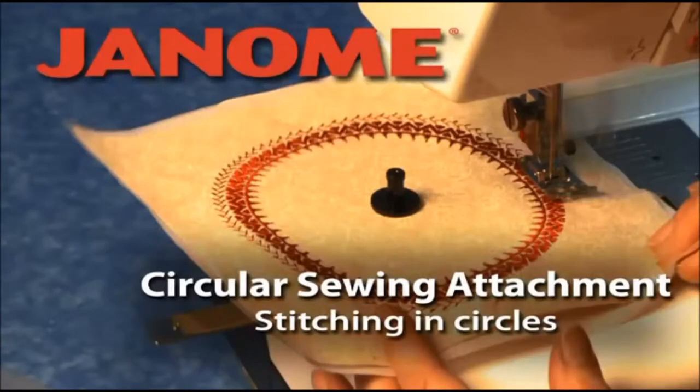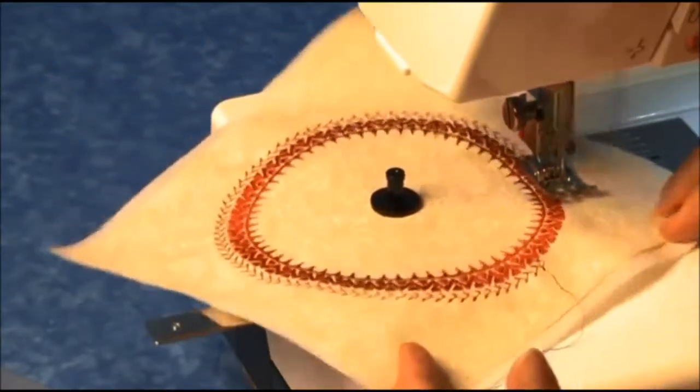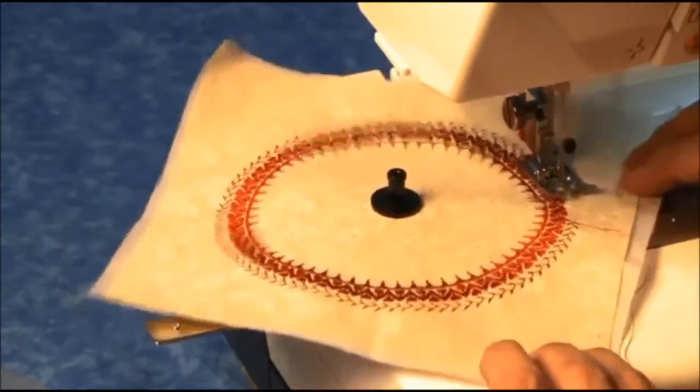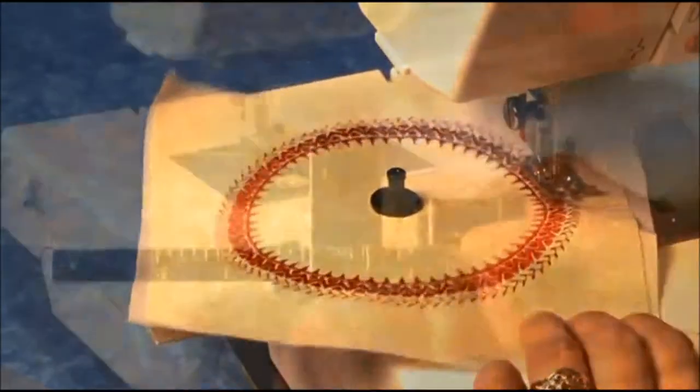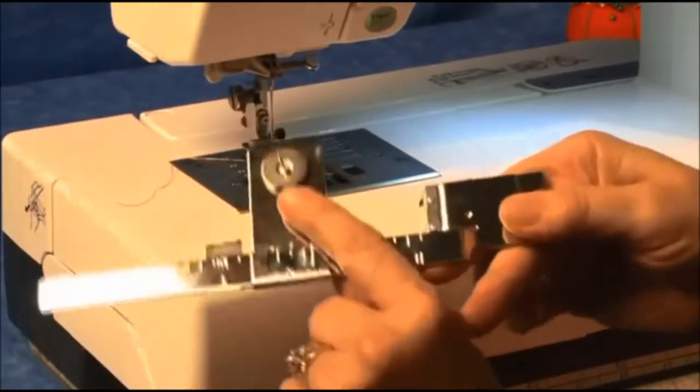The circular sewing attachment allows you to stitch decorative stitches in a circle up to 10 inches in diameter. It has an adjustable arm and a sharp point called the pin on which your fabric rotates while stitching.